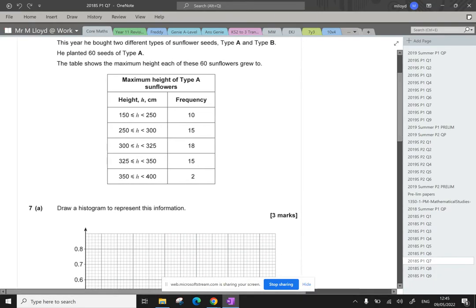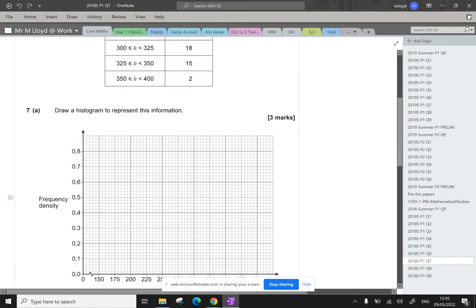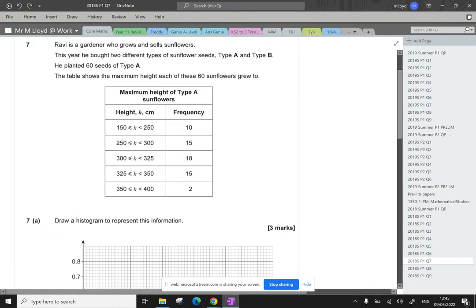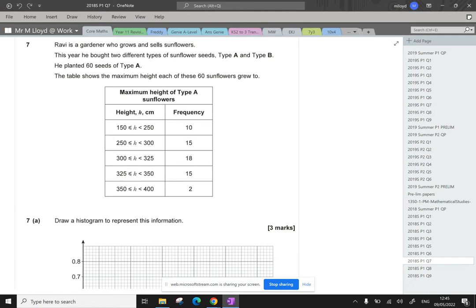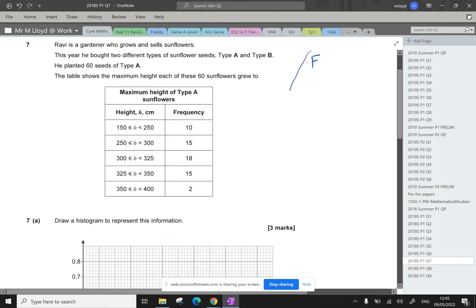So, maximum height, draw histograms. We've got the base there. Effectively, frequency equals the frequency density times by the class width.